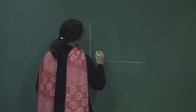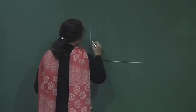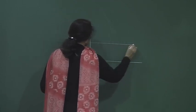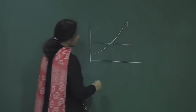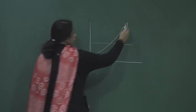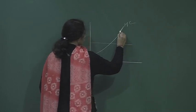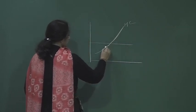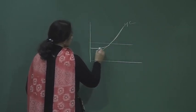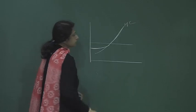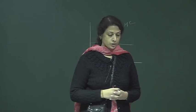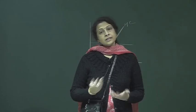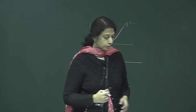In the case of the perfectly competitive firm, this is the price line and this is the marginal cost. We saw that the marginal cost above the minimum average variable cost is the supply curve of a perfectly competitive firm, but that is not the case for a monopoly.